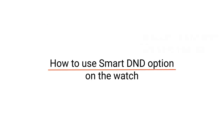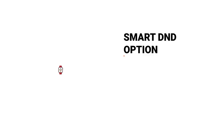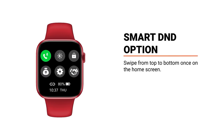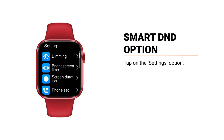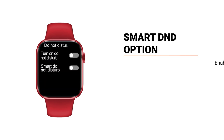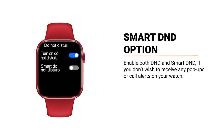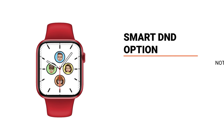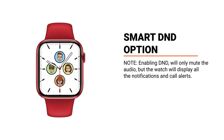How to use the Smart DND option on the watch: tap on the Settings option. Scroll and select the Do Not Disturb mode. Enable both DND and Smart DND if you don't wish to receive any pop-ups or call alerts on your watch. Note: enabling DND only will mute the audio, but the watch will still display all the notifications and call alerts.